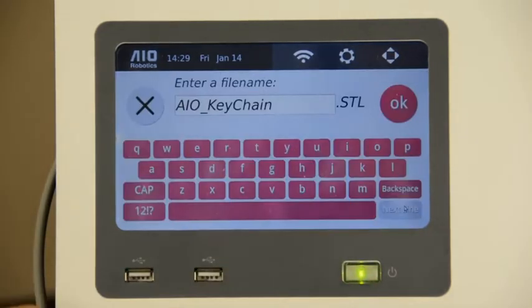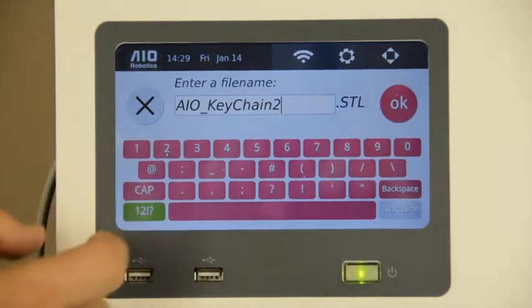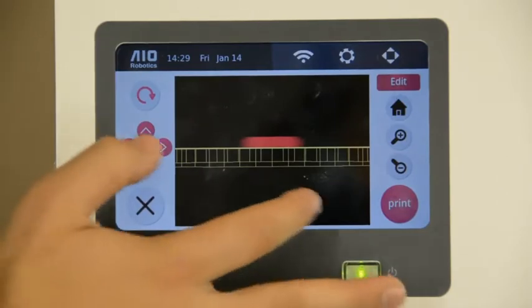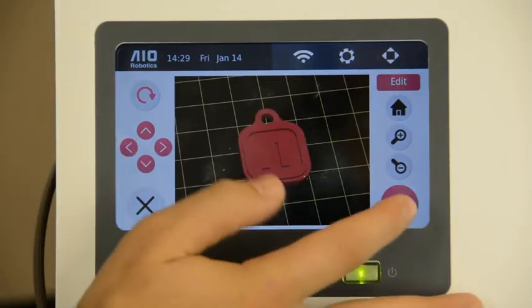Now we save the file. We store it under a new name. We call it AAO keychain 2 and then store it on the machine. When we are ready we just press the print button.